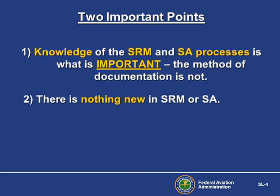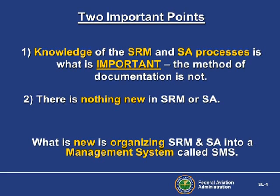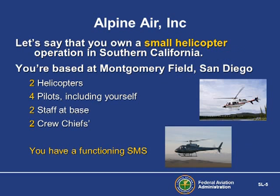Secondly, remember that there is nothing new in safety risk management and safety assurance. It's what you've been doing all your aviation career – identifying hazards, analyzing risk, mitigating risk, and following up. What is new is organizing what you've been doing for years into a management system called SMS. Let's say you own a small helicopter operation in Southern California – Alpine Air. You're based at Montgomery Field, San Diego, and have the assets shown on the screen.